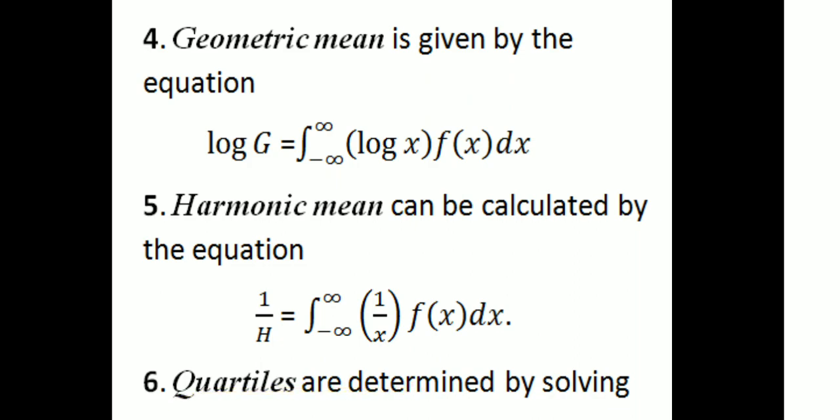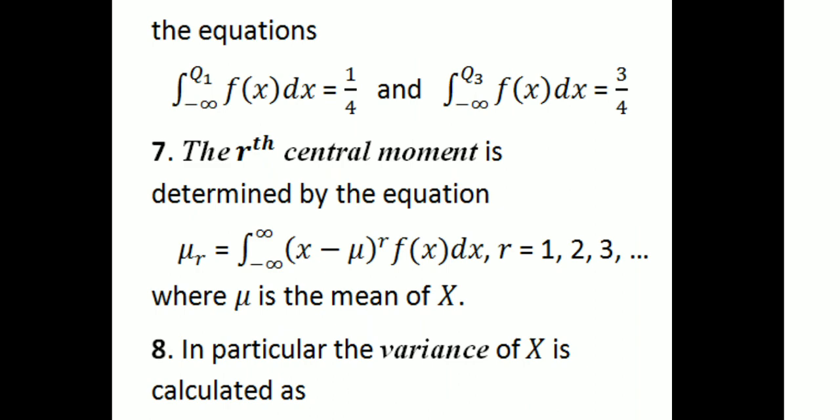The quartiles Q1, Q2, and Q3 are determined by solving the equations: integral from minus infinity to Q1 of f(x) dx = 1/4, and integral from minus infinity to Q3 of f(x) dx = 3/4. The distribution is divided into 4 equal portions. Next, the central moments are determined by the equation: μ_r = integral from minus infinity to infinity of (x − μ)^r · f(x) dx, where r = 1, 2, 3, etc., and μ is the mean of the random variable x.